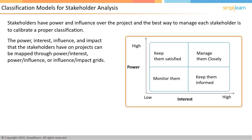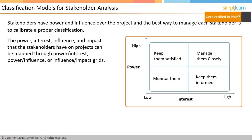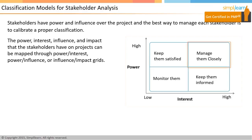The diagram on the screen has an x-axis representing interest level and a y-axis representing power level. Based on the various combinations of power and interest levels, the grid is divided into four quadrants. The stakeholders in the top-right quadrant, with high power and high interest, need to be managed closely — you have to monitor their involvement and engagement very closely.